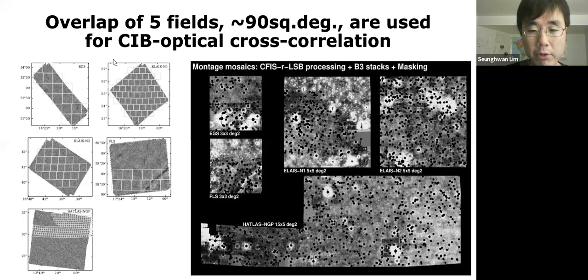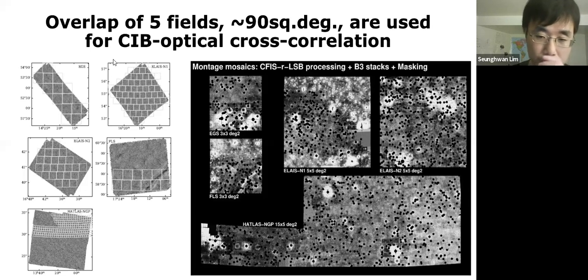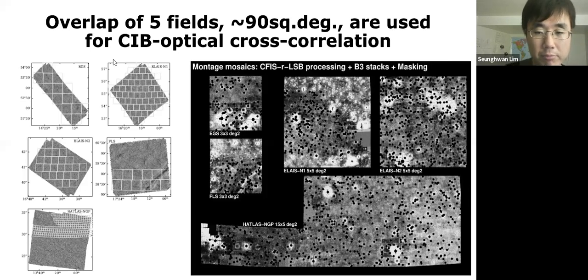A second question from Qing was about the power index of the power spectra. The speaker acknowledged the question but the answer was cut short as the session reached 4 pm.